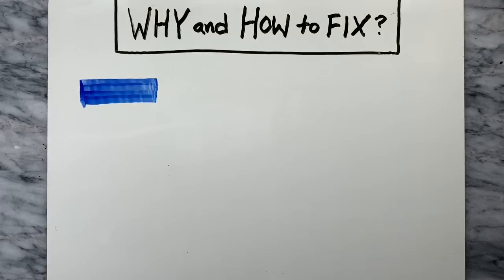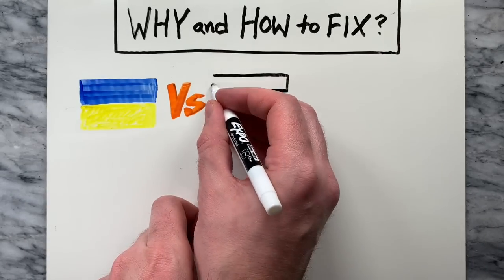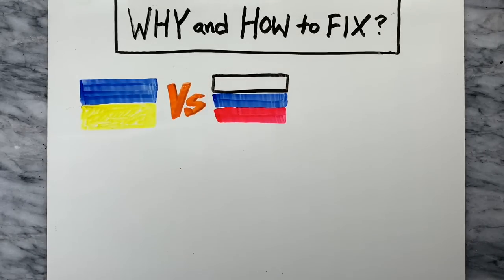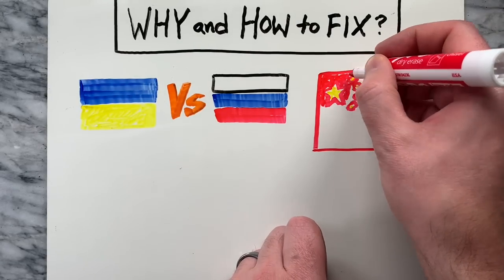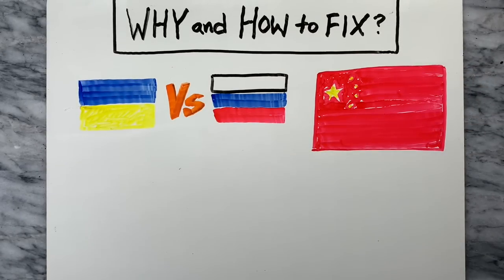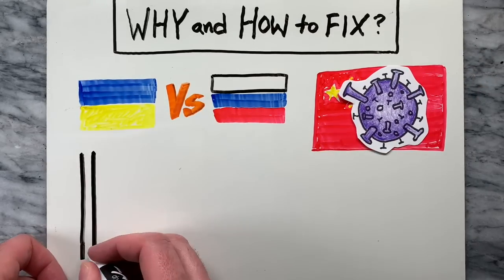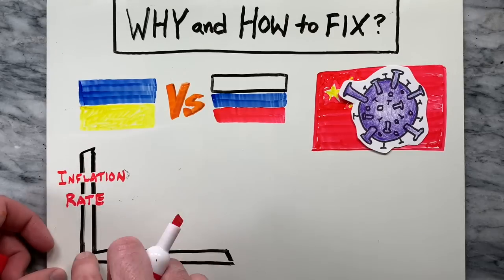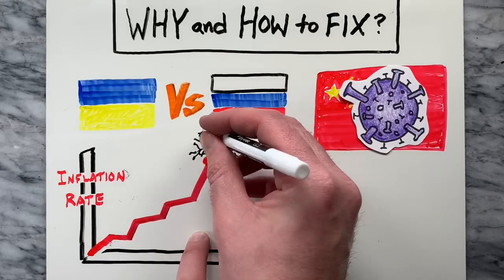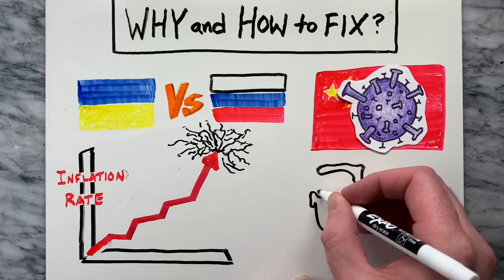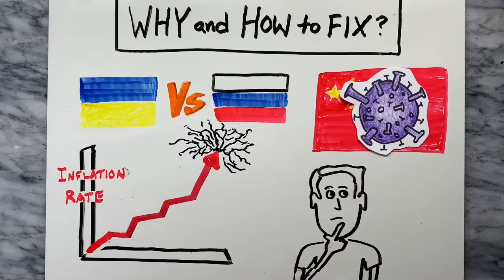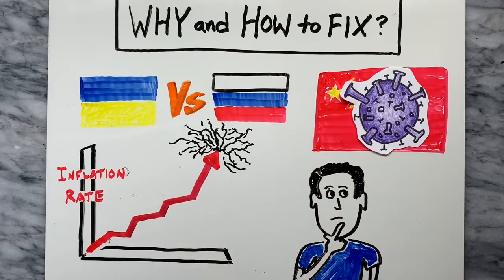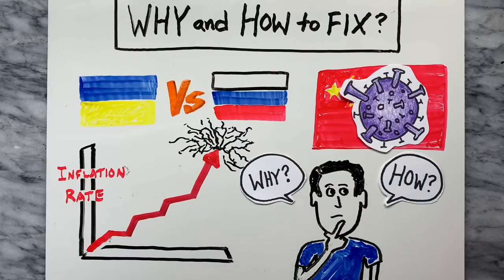Now that we know what inflation is generally speaking, many wonder why it's happening and how to prevent it from accelerating at the rate it currently is. There are certainly many events causing inflation to rise, such as the war in Ukraine and reoccurring lockdowns in places like China due to COVID-19. However, there are many other things that could be contributing to the recent 40-year high in the United States and acceleration of inflation around the globe. As inflation will likely get worse before it gets better, let's take a look at a few theories as to why this is happening and potential ways to fix it and slow the rate of inflation.